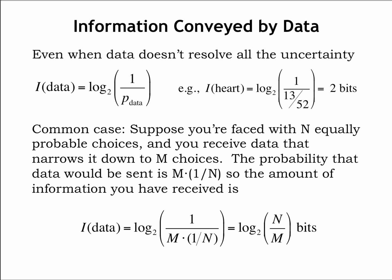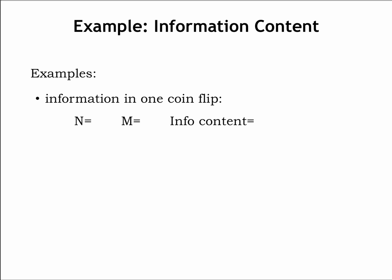Let's look at some examples. If we learn the result, heads or tails, of a flip of a fair coin, we go from two choices to a single choice, so the information received is log base 2 of 2 over 1, or a single bit. This makes sense: it would take us one bit to encode which of the two possibilities actually happened, say 1 for heads and 0 for tails.